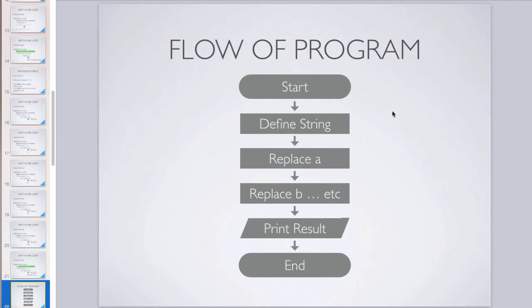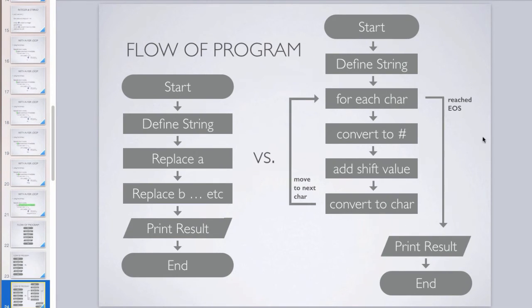So we go from a flow of program that looks like this for the string.replace method, where basically we define the string at the start, then we replace a, then we replace b, all the way down to z, and then we print the result, to instead something that looks like this. It looks more confusing, but it works better. And we'll talk about why later. So it starts, it defines the string, then for each character, it'll convert it to a number, add the shift, convert it back to a character, and then move to the next character. And it'll keep doing this until it's out of characters. Once it reaches the end of the string, it will print the result, and the program will end.